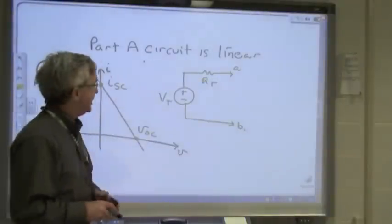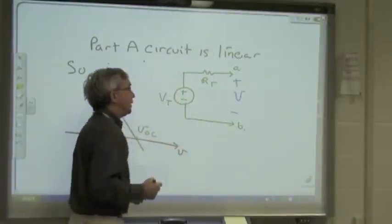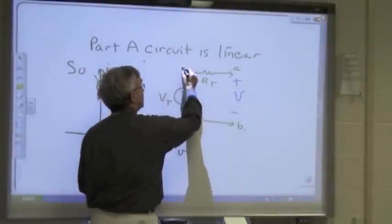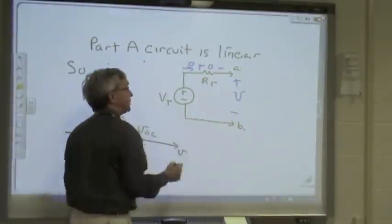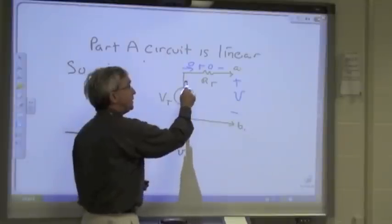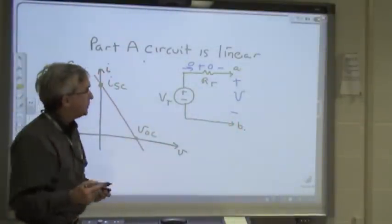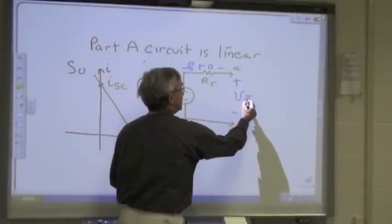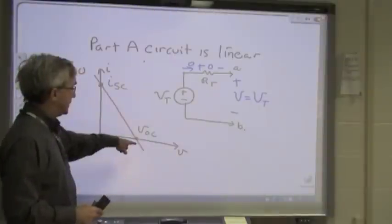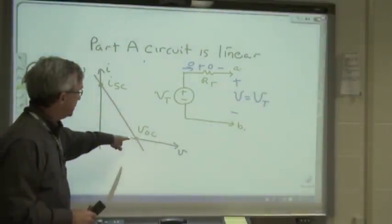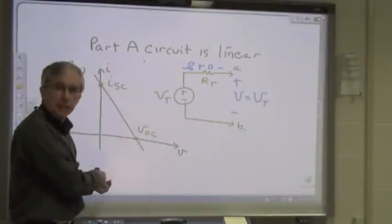That will be the open circuit voltage for the Thevenin equivalent. With zero current flowing, there are zero volts across the resistor. By KVL: minus V sub T plus zero plus V equals zero, so the open circuit voltage for the Thevenin equivalent is just equal to V sub T. Therefore, if the Thevenin voltage source equals the open circuit voltage of circuit part A, we have one point in agreement between the Thevenin equivalent and the original circuit.